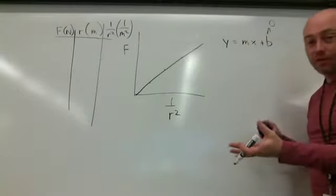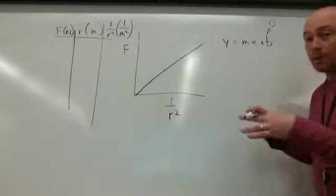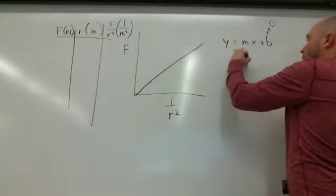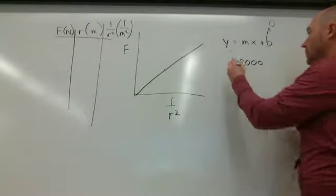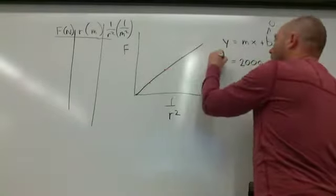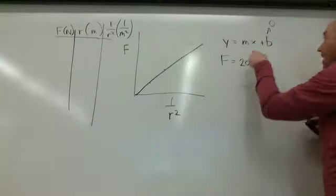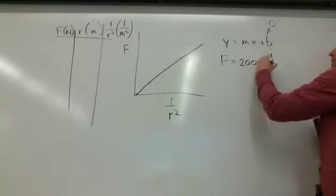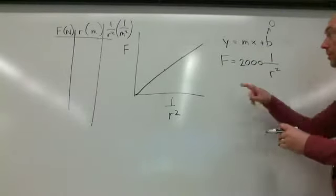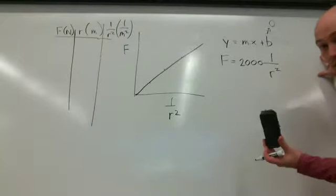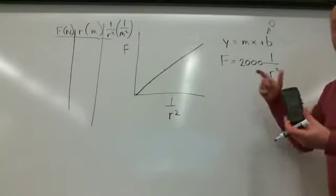But here's where you guys got to be careful. M is going to be some number. We'll make up a number. We're going to say it's 2,000. But here's where you got to be careful. You're not graphing y. You're graphing F. And I'm not graphing x. I'm graphing 1 over R squared. So it's y equals mx plus b, which is 0. And this is what you would get.